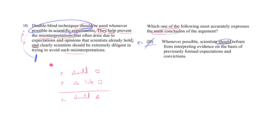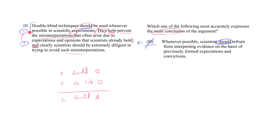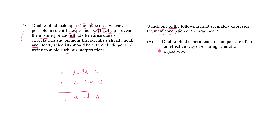If you're thinking: does that mean I can automatically eliminate every answer choice that merely parrots the last bit of the stimulus in a main conclusion question? The answer is no, because sometimes the outside writers actually do throw the actual conclusion into the last claim of the stimulus. If that's the case, then yeah, the last claim is the conclusion and you'll find the answer choice that parrots it. My point is just that it's not a reliable technique. The reliable technique is to actually identify premise and conclusion, and once you identify the conclusion, wherever it may be, find the best paraphrasing of it in the answers.